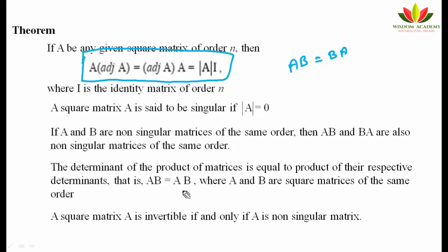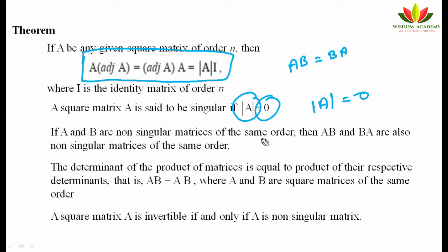A matrix is called singular if its determinant value is 0. If |A| = 0, the matrix is singular; otherwise it is non-singular (non-zero determinant). Another theorem states: if A and B are non-singular matrices of the same order, then AB and BA are also non-singular matrices of the same order — meaning the product of non-singular matrices remains non-singular.